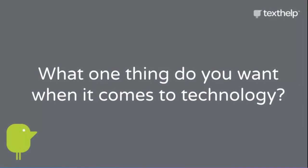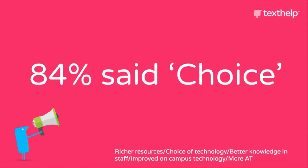The next question was: what one thing do you want when it comes to technology? This surprised us as well. 84% of students said choice. For 84% of all students across our sample, they wanted more choice in the technology they use to access their courses. The other options included richer resources, better knowledge in staff, better technology in class, or access to more assistive technology. But 84% said they simply want to choose the technology they use, not have it directly dictated to them.